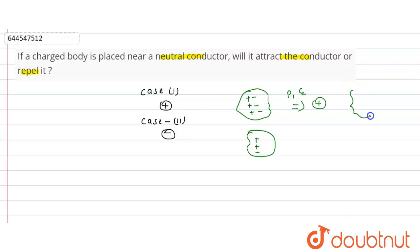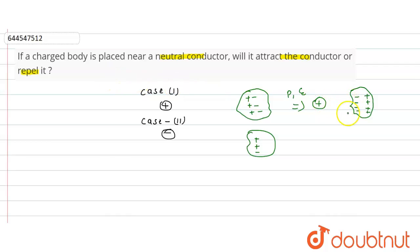The positive charges in the conductor are repelled and shift away from the charge body. The negative charges are attracted and come closer to the charge body, so the distance between the negative charges and the charge body is less.